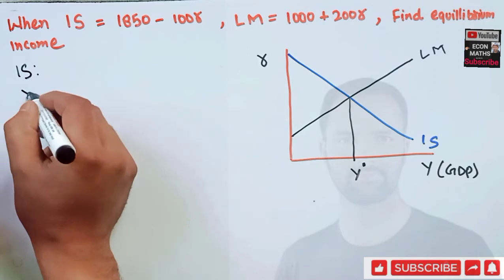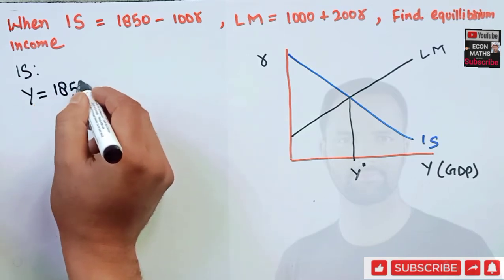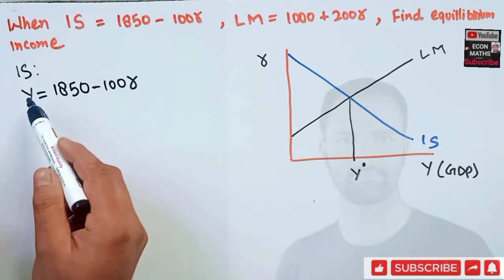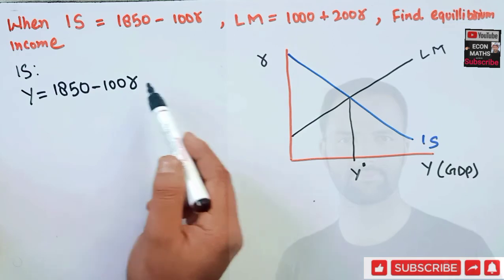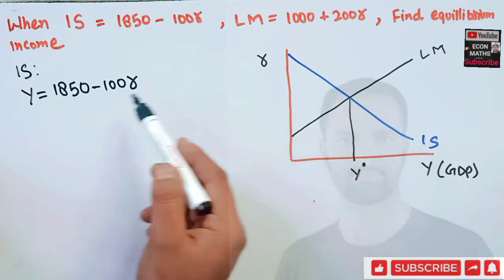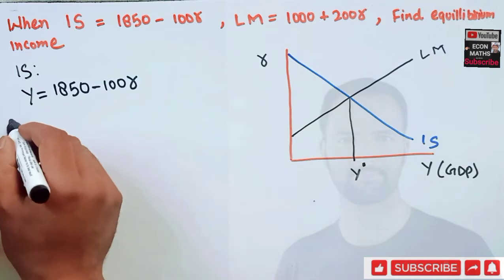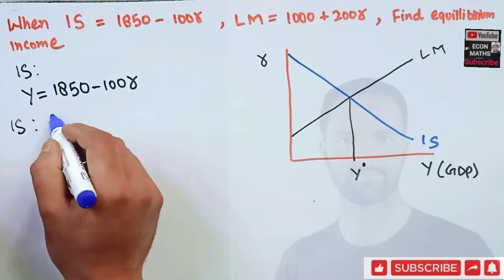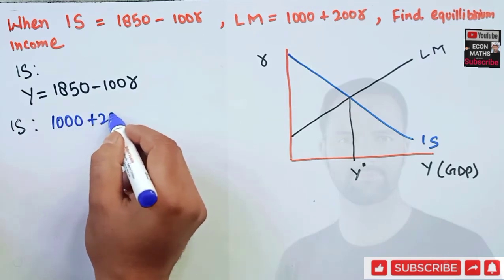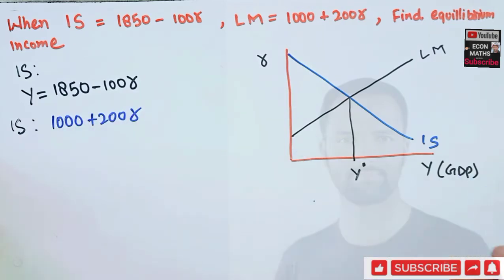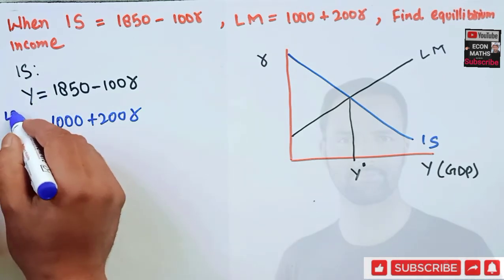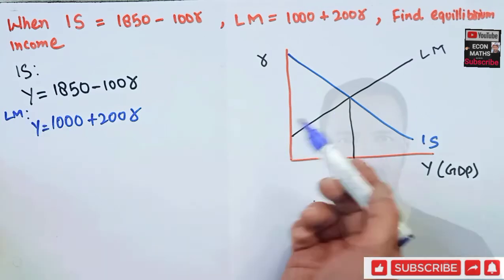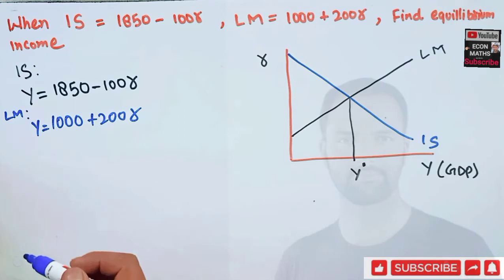Our IS curve is given by Y = 1850 minus 100R, since it shows different levels of income and rate of interest where savings equals investment. Our LM function is given by Y = 1000 plus 200R. The IS equation has a negative slope and the LM equation has a positive slope.